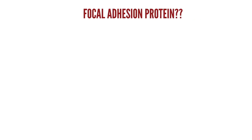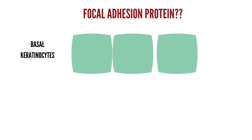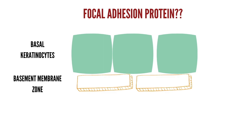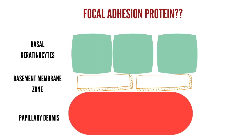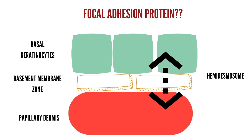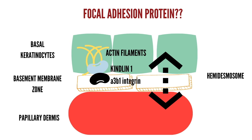The kindlin-1 protein is a component of focal adhesion proteins. It's important to understand that these are different structures from hemidesmosomes. These are basal keratinocytes, this is the basement membrane zone, and this is the papillary dermis. Hemidesmosomes connect keratin filaments to the basement membrane. Focal adhesion proteins are separate structures where actin filaments are connected to the basement membrane. Actin filaments connect to kindlin-1 protein, which is further connected to alpha-3 beta-1 integrin.